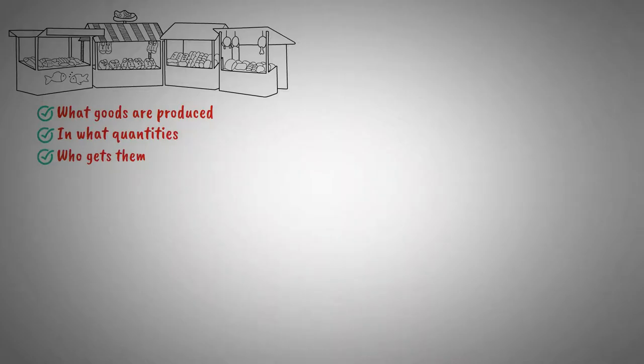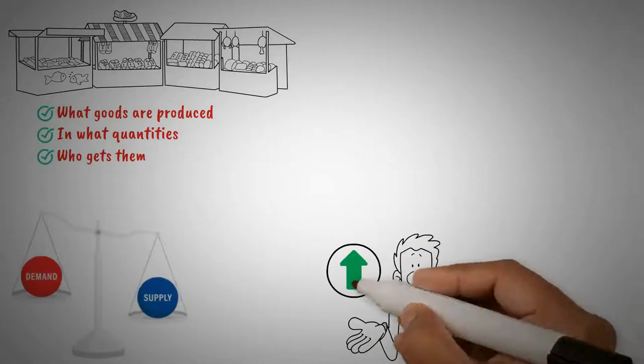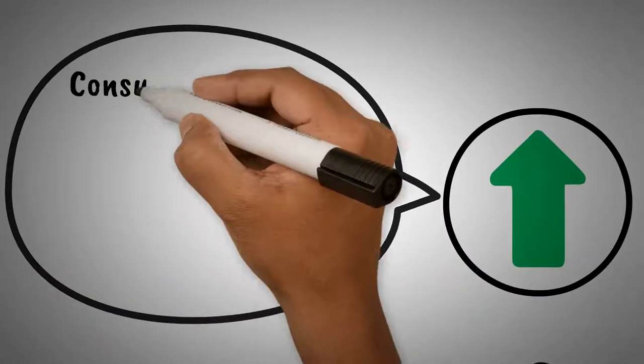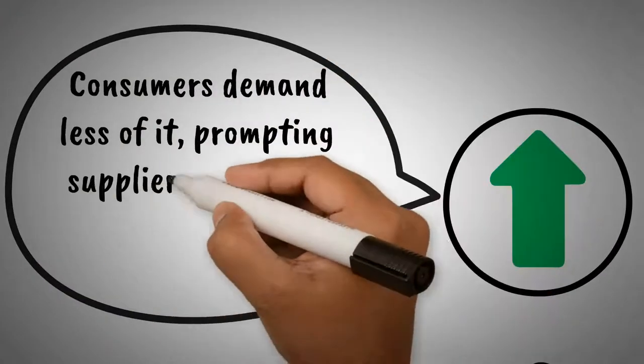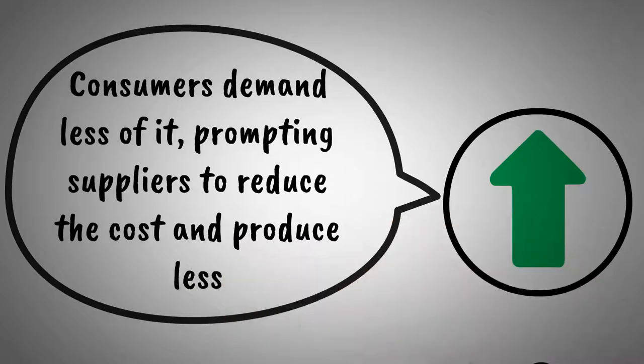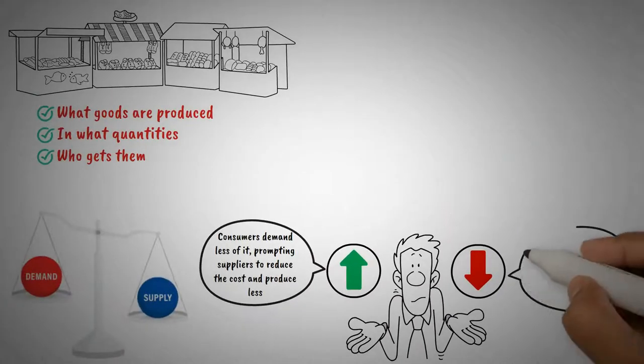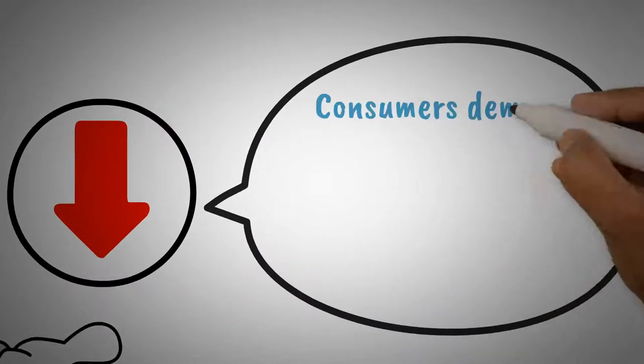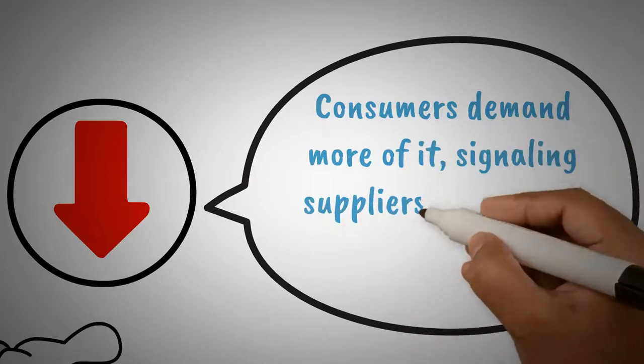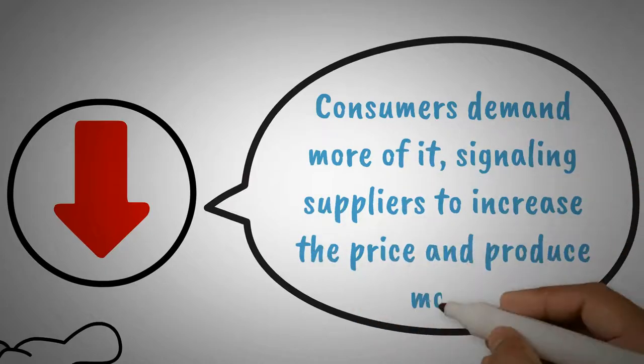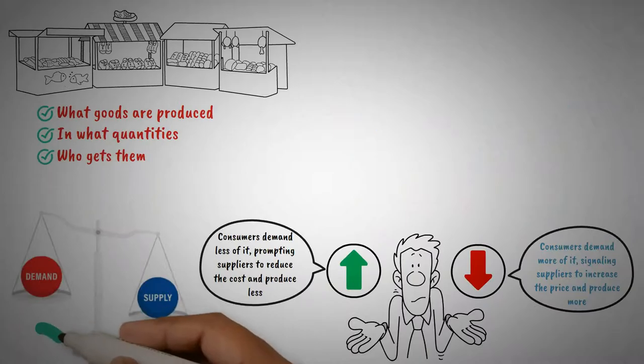and who gets them. The forces of supply and demand drive this mechanism. When the price of a good increases, consumers demand less of it, prompting suppliers to reduce the cost and produce less. Conversely, if the price decreases, consumers demand more of it, signaling suppliers to increase the price and produce more. This self-correcting cycle ensures that supply matches consumer demand.